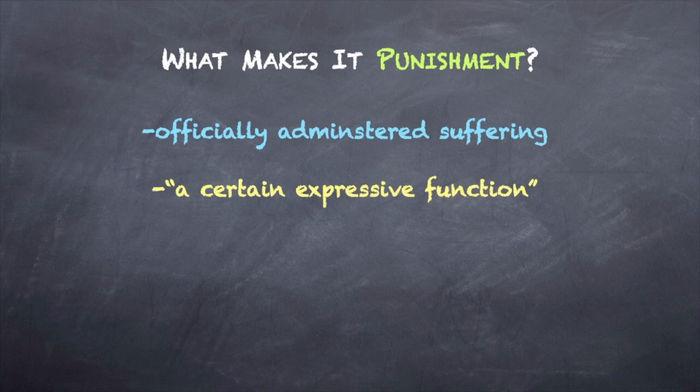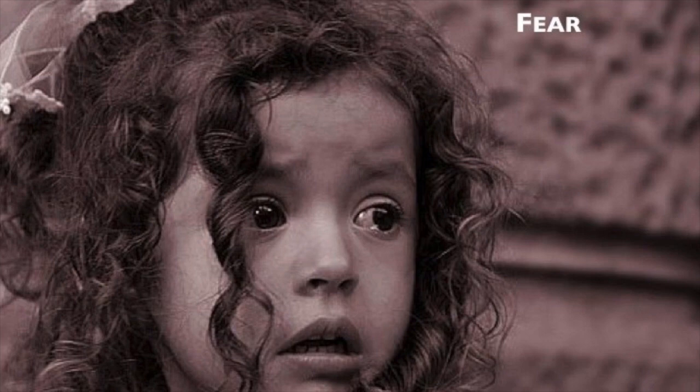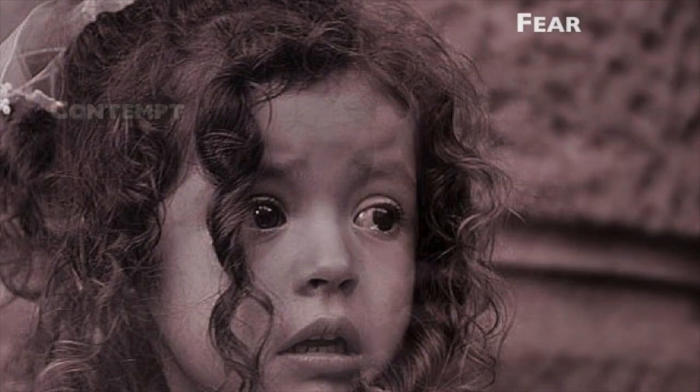The answer is that criminal punishment serves a certain expressive function that taxes and fees do not. Criminal punishment is meant to express certain emotions — society's hatred of the offender's conduct, society's fear of the offender, and society's contempt for what the offender has done. If that is what distinguishes fees and taxes from punishment, why not simply express those feelings by declaring them? It hurts to be told that society hates us, fears us, finds us contemptible for something we've done. Why inflict further suffering?